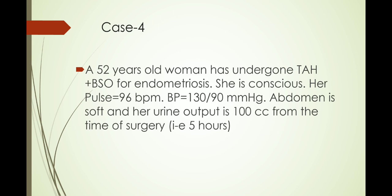Case number four: a 52-year-old woman has undergone TAH+BSO for endometriosis. She is conscious, pulse is 96 beats per minute, BP is 130/90 mmHg, abdomen is soft, and urine output is 100 cc from the time of surgery — that is over five hours. So one thing should quickly come to mind: the main problem is the urine output. It should be 30 cc per hour, which is low here — only 100 cc in five hours.